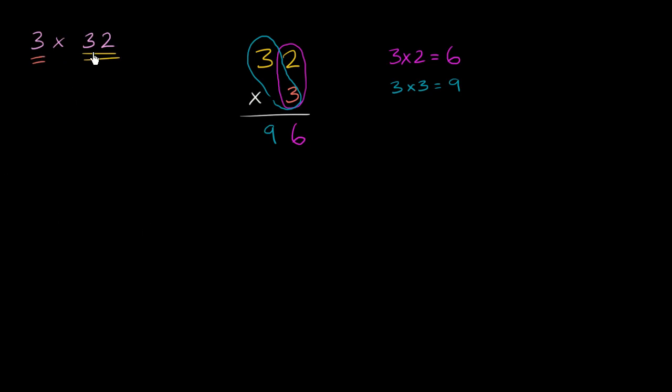Remember, 3 times 32 is the same thing as 3 times 30 plus 3 times 2. And if you look at it that way, that's essentially what this process did. We did 3 times 2 is 6. 3 times 30 is 90. You add them together, you get 90 plus 6 is 96.